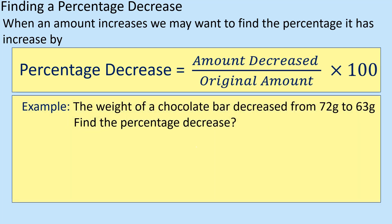So, an example, the weight of a chocolate bar decreased from 72 to 63, well, it's gone down 9 grams. So 9 divided by the original, which is 72, so 9 out of 72, times by 100.